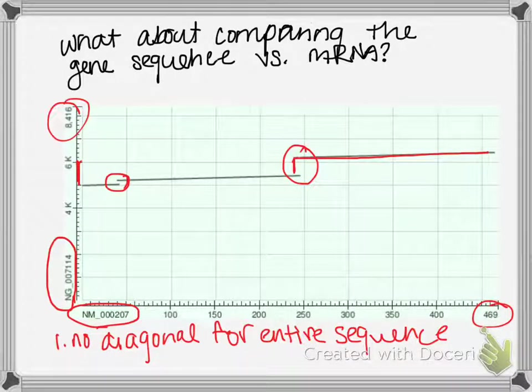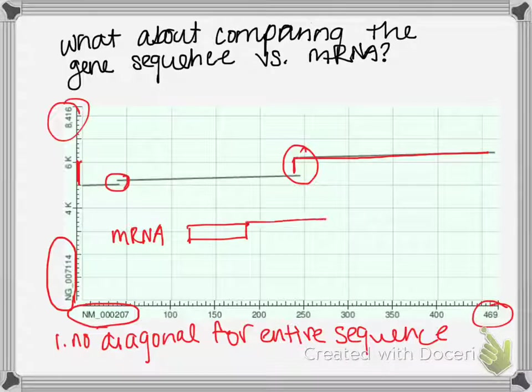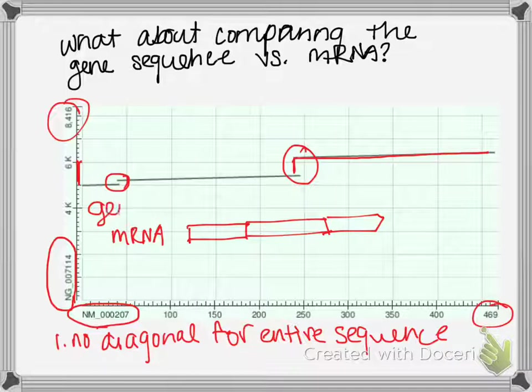So this tells us that there are segments within the mRNA sequence that match perfectly to the gene, but that the gene sequence has other parts that are not found in the mRNA.